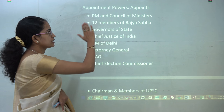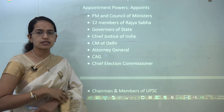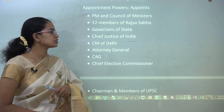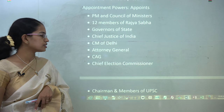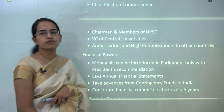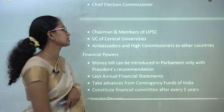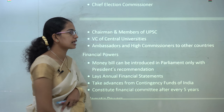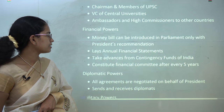The president has a crucial role in appointments. He appoints the prime minister and the council of ministers, the 12 nominated members of Rajya Sabha, the governors of the states, the Chief Justice of India, the Chief Minister of Delhi, the Attorney General, the Comptroller and Auditor General, and the Chief Election Commissioner. Additionally, the chairman and members of UPSC, the vice chancellors of central universities, and ambassadors and high commissioners to other countries are all appointed by the president.